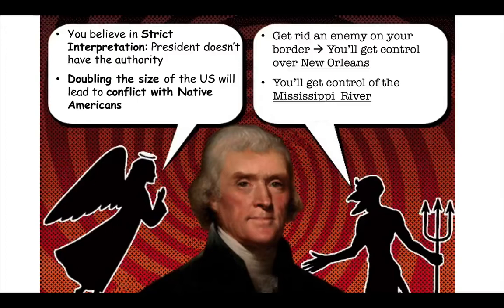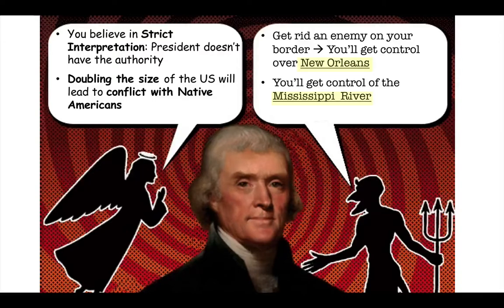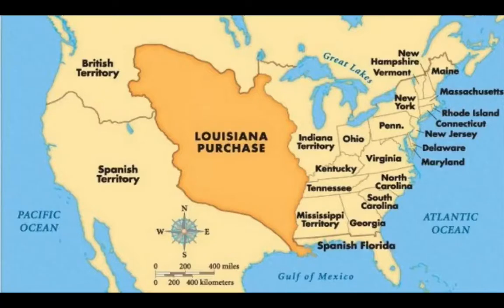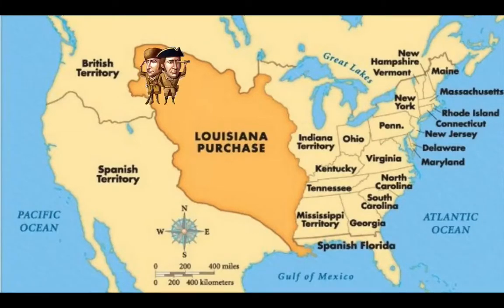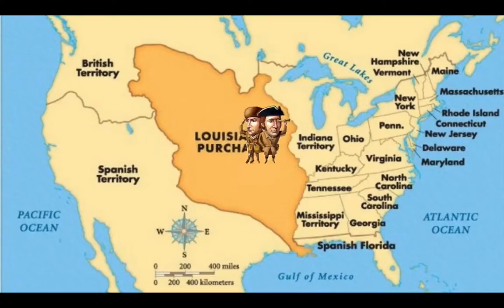Why? Because by buying the Louisiana Purchase, he gained control of the Mississippi River and he gained control over the port of New Orleans. Those were absolutely critical. Access to the Mississippi River and access to New Orleans was critical to shipping for the U.S. and to our ability to engage in foreign trade. There was no way he was going to say no. So now he's bought this huge chunk of land — he's basically doubled the size of the country — but he has no idea what's on it.